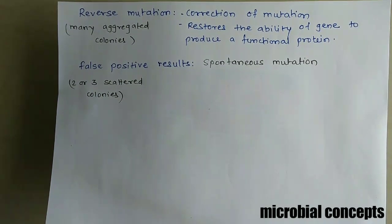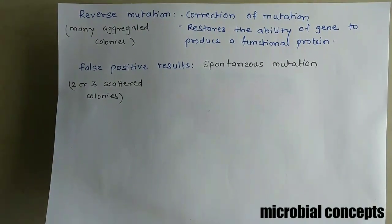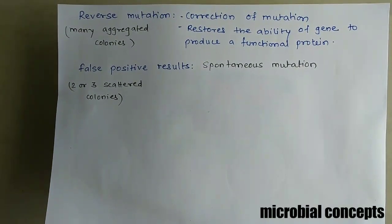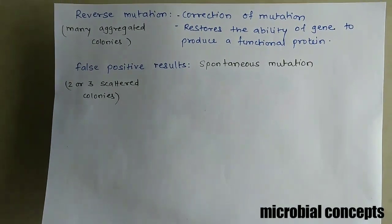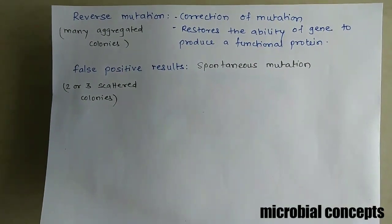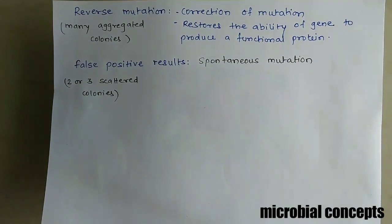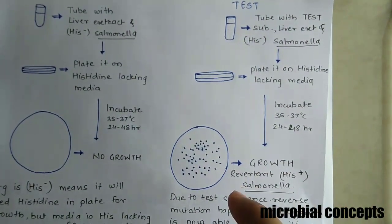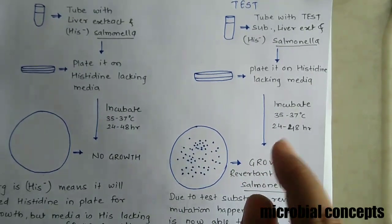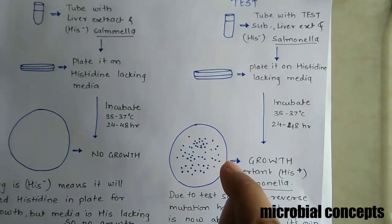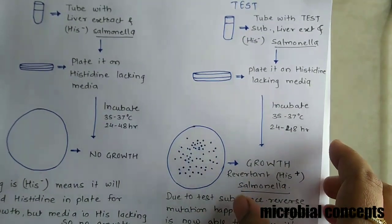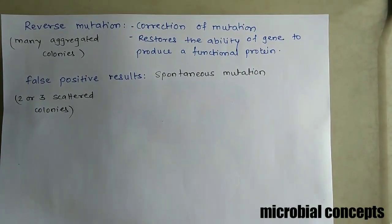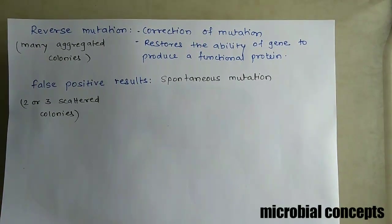To summarize: in the case of control, you will get a blank plate. In the case of a non-mutagenic substance in the test, you also get a blank plate. Only when the test substance is a mutagen — having mutagenic properties — will you get growth. And if there are two or three colonies on the plate, it can be concluded as a spontaneous mutation. Thank you, hope you enjoyed this video.